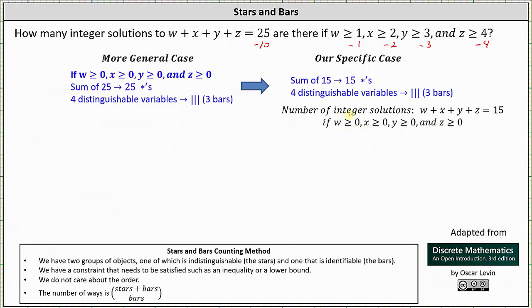The number of integer solutions to this equation with these restrictions can be found using the stars and bars method with 15 stars and three bars. So whichever approach we take, the result is the same. The number of integer solutions to the original equation with the original restrictions on the variables is 18 choose three. This shouldn't be surprising if we think of bit strings with stars as zeros and bars as ones — the number of bit strings of length 18 with three ones is 18 choose three.